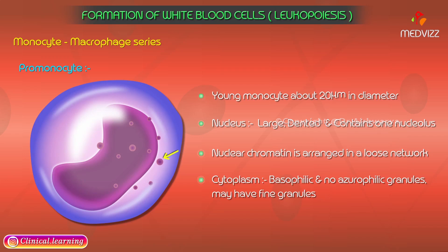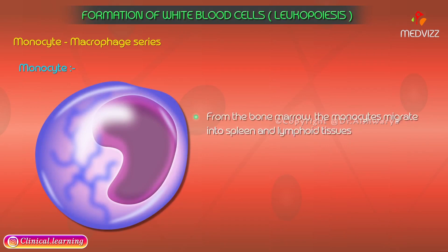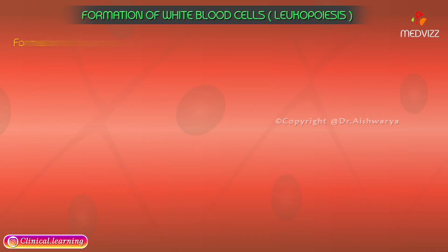The cytoplasm of the pro-monocyte is basophilic and contains no azurophilic granules but may have fine granules larger than those in the mature monocyte. The third stage is the monocyte, which migrates from the bone marrow into the spleen and lymphoid tissues in considerable numbers. The transformed stages of these cells in various tissues are called tissue macrophages, forming part of the tissue macrophage system, previously known as the reticuloendothelial system.